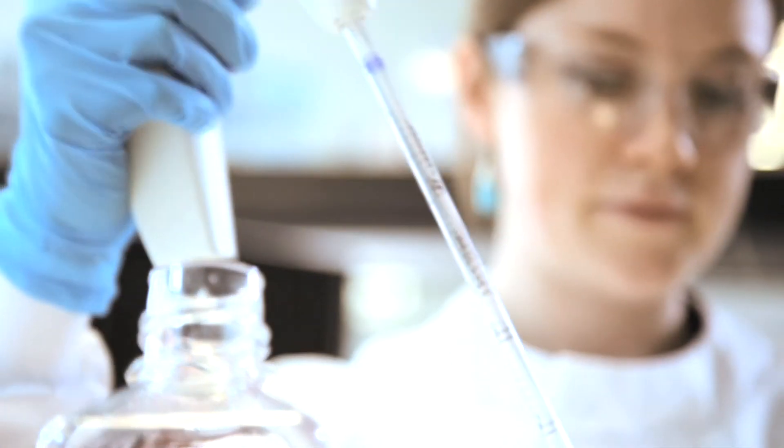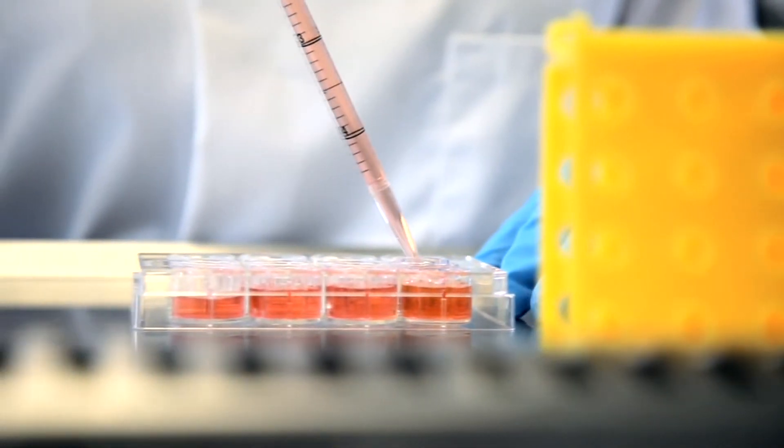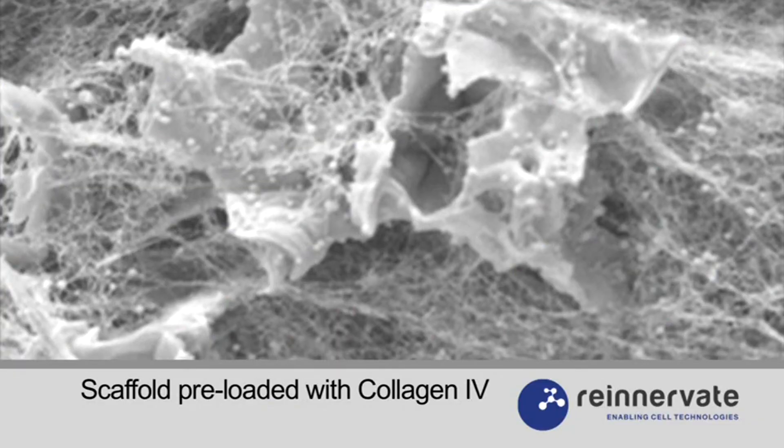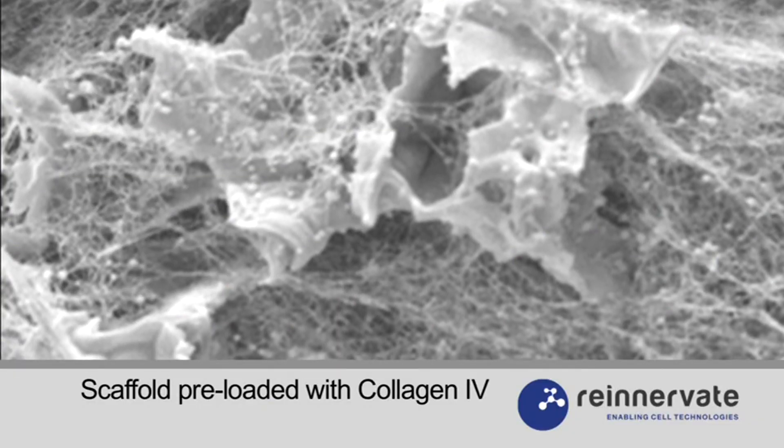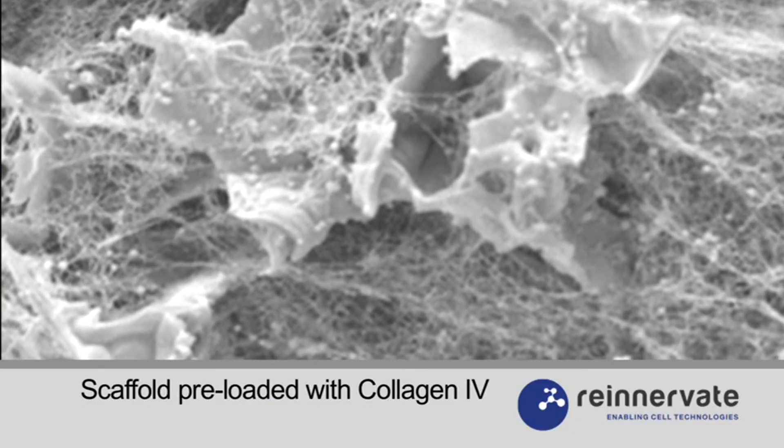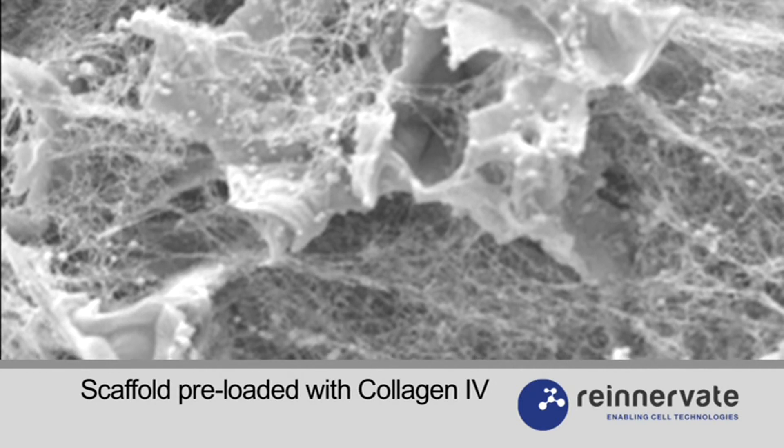As with 2D culture, if you're using a serum-free medium, then applying a coating agent prior to cell seeding can enhance cell attachment to the Alvatex. It's possible to coat the Alvatex with a number of reagents, such as extracellular matrix proteins, polylysine and more specialized hydrogels, including matrigel.